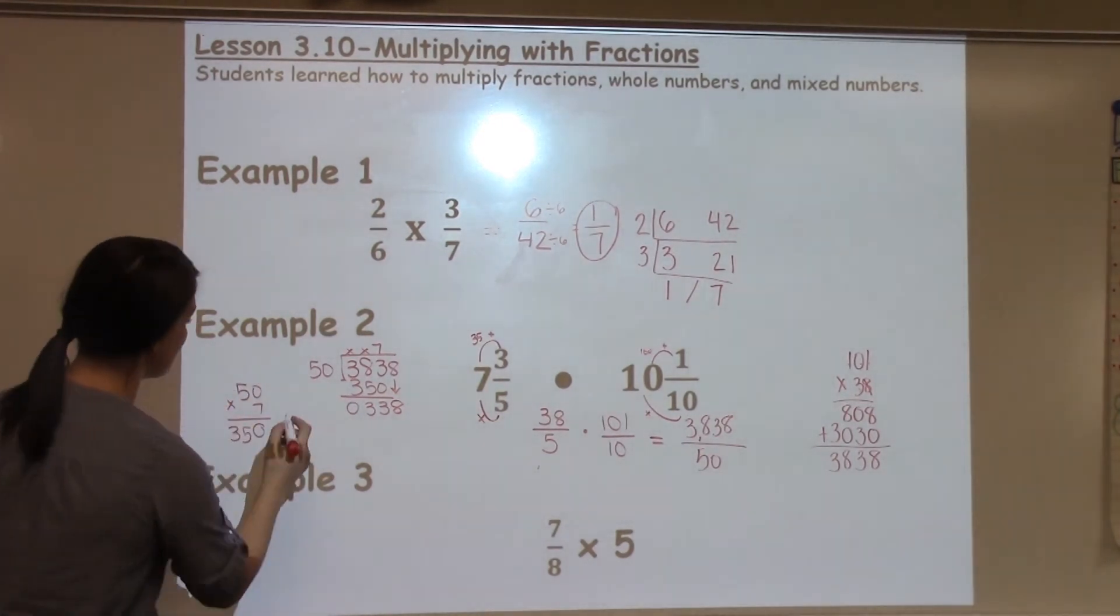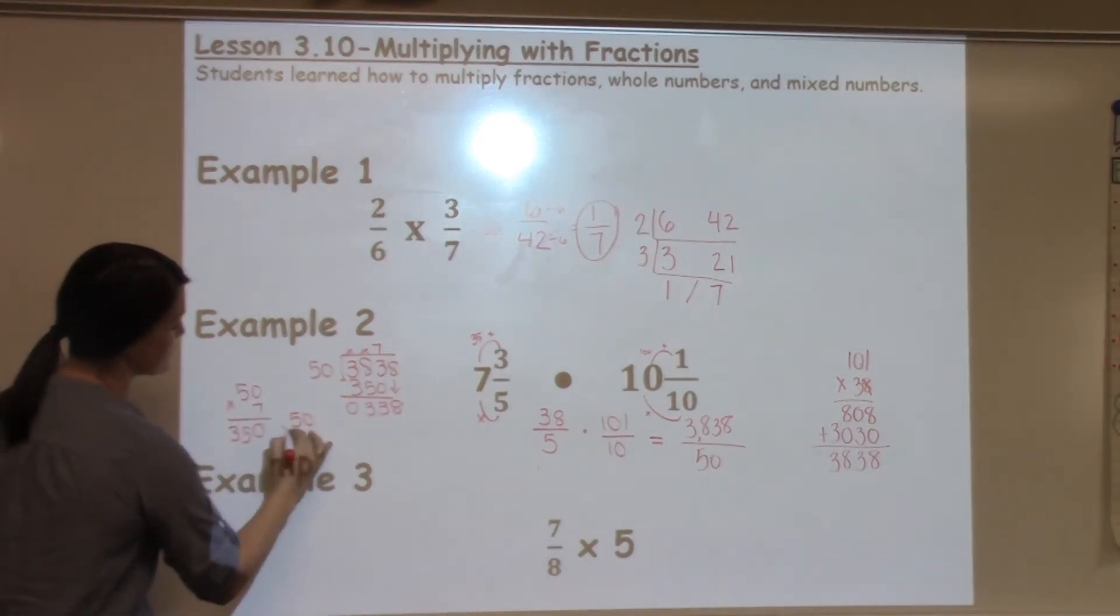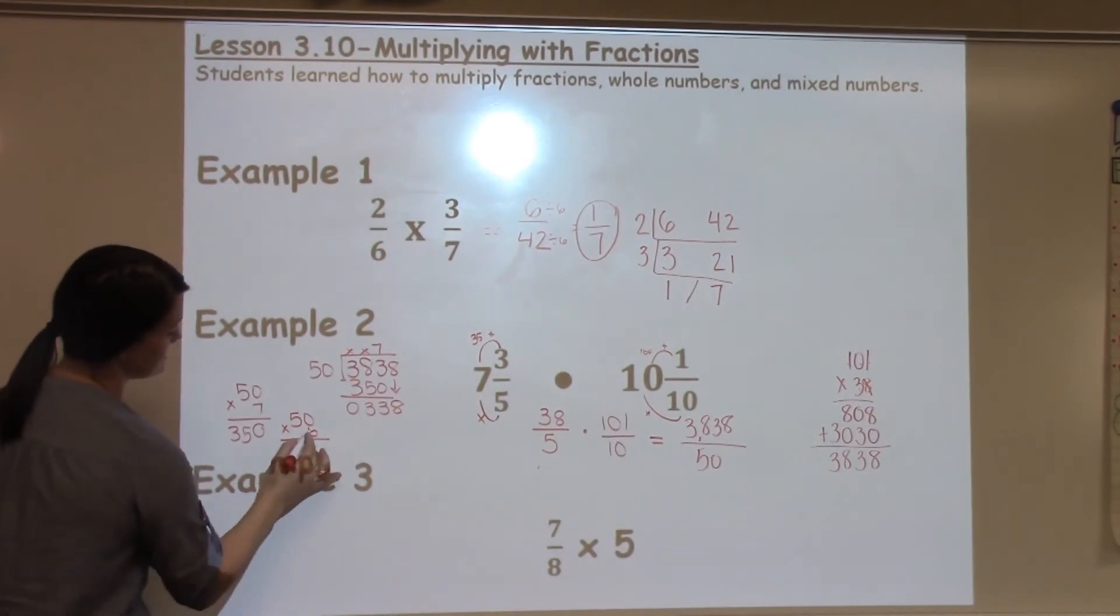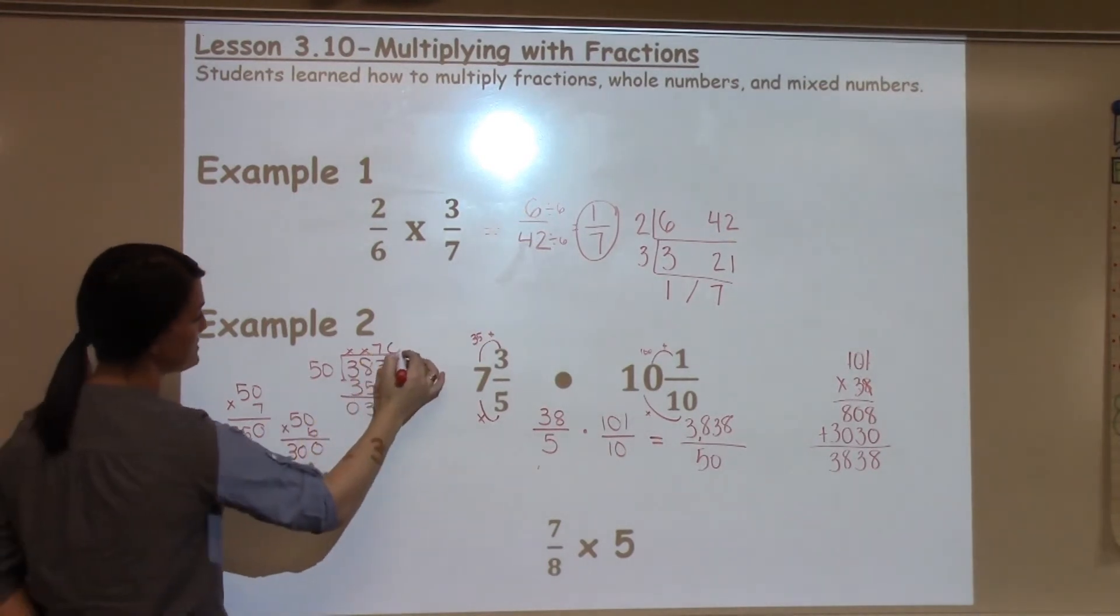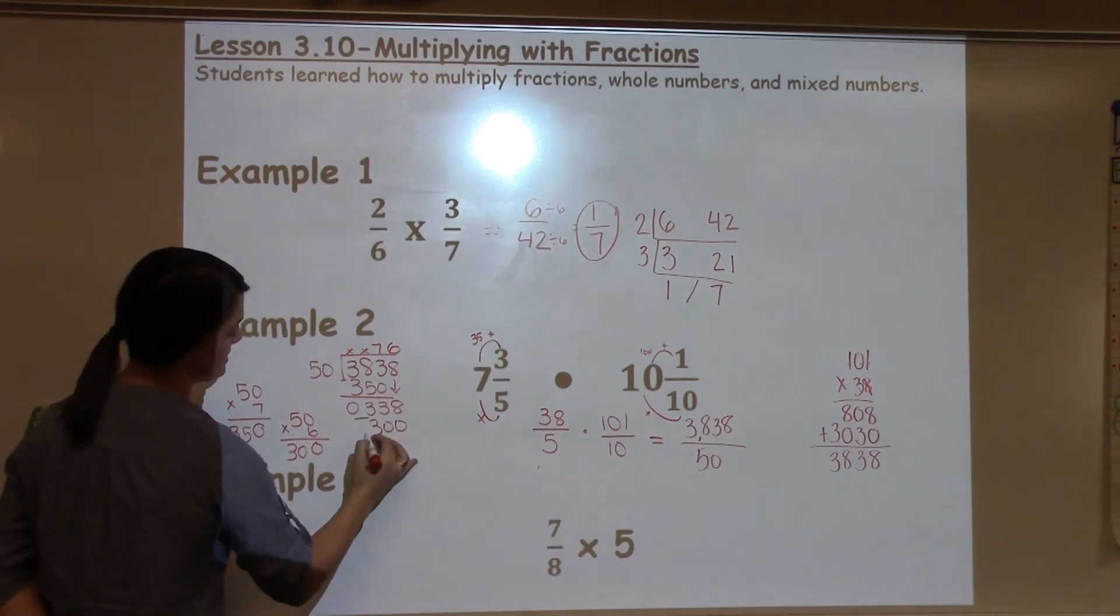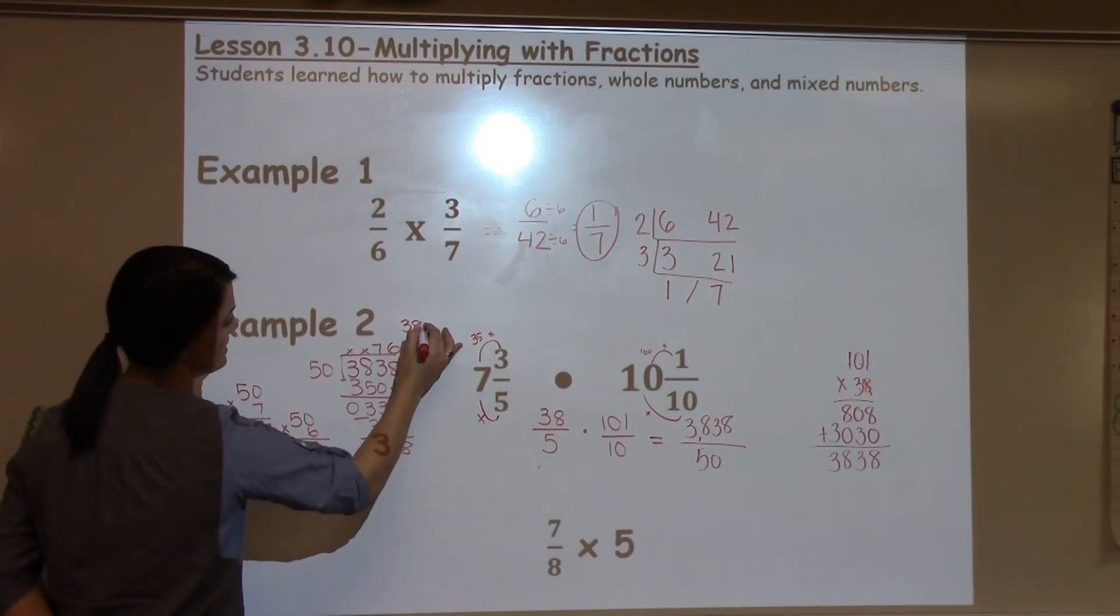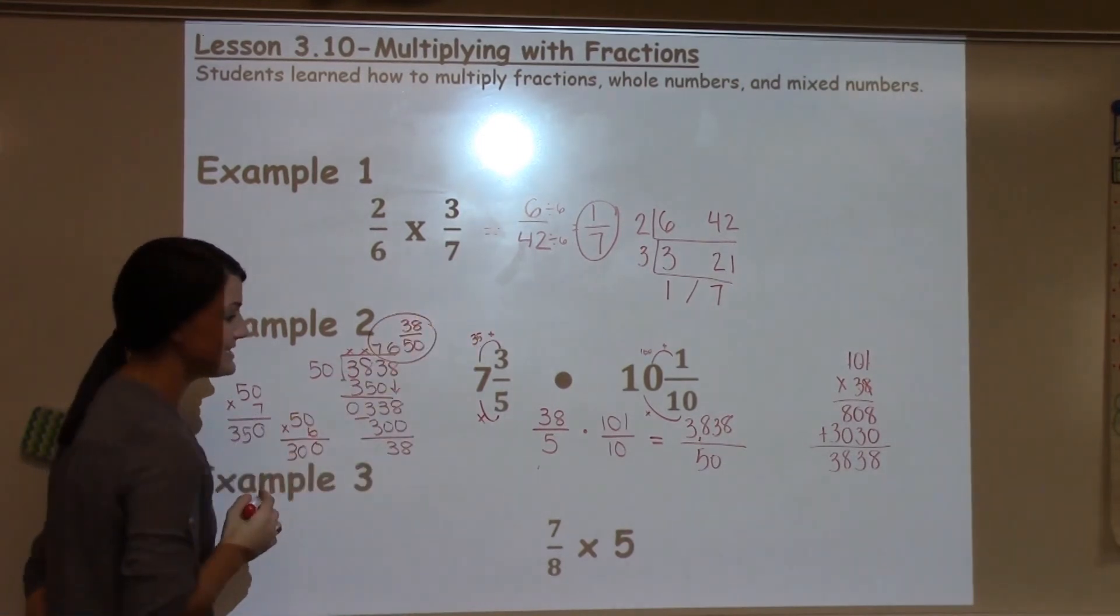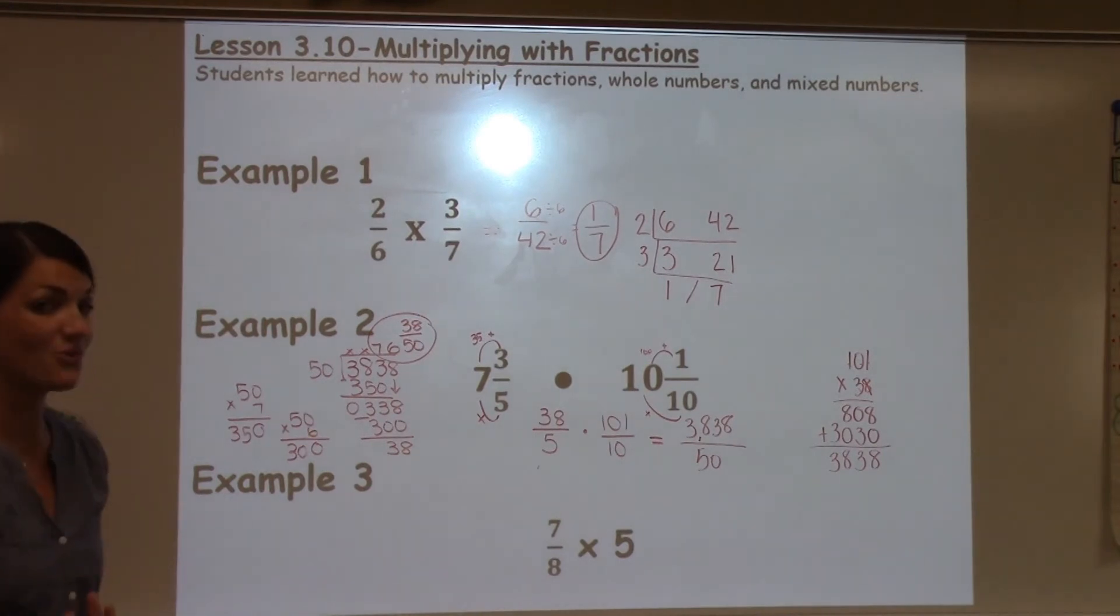350 is too much, but I know it's really close. So I'm going to try 50 times 6 to see if I can get what I need. And it gets me pretty close. 6 times 50 is 300. When I subtract, I'm left with 38. And my answer is 76 and 38/50 so far.